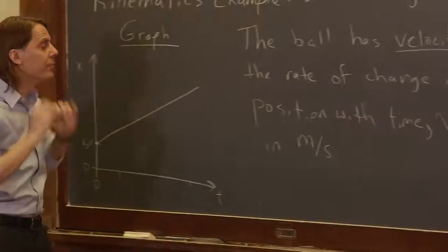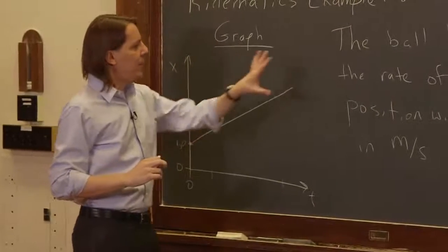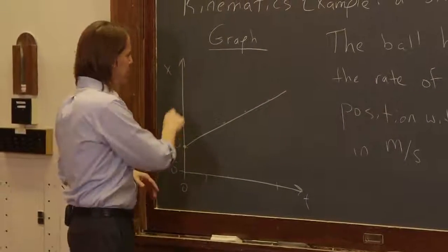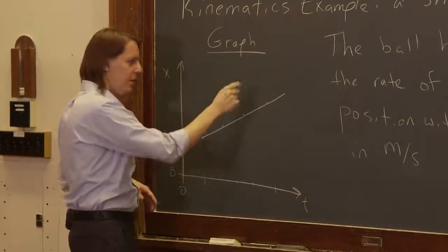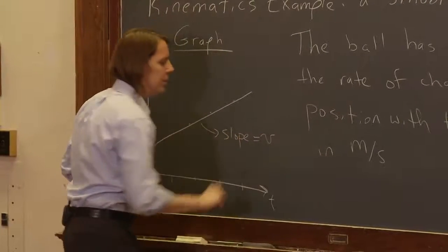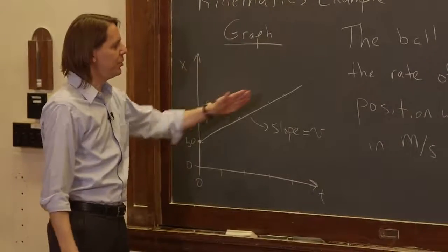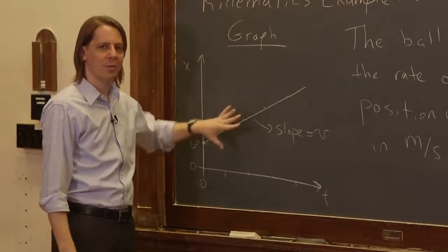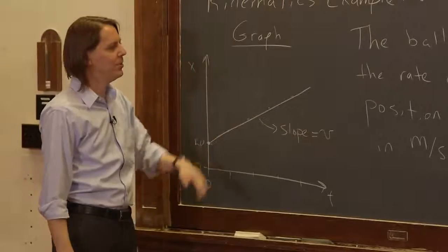Now how you get the velocity from a graph like this is, if it's position-time, it makes a line and the slope of the graph equals the velocity. Maybe you're familiar with lines, y equals mx plus b, etc. The slope is the velocity.